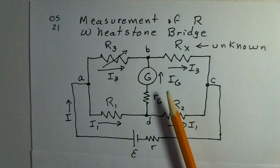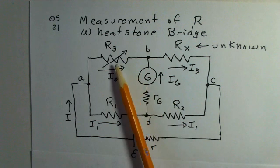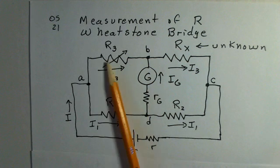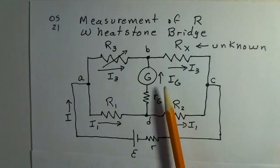We're going to set up an adjustable resistance R3. We're going to set a value there such that the current in the galvanometer in this middle branch is 0.